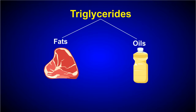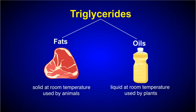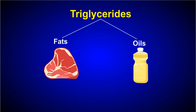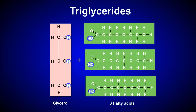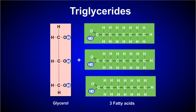Let's take a closer look at the category of lipids known as triglycerides. Triglycerides include the fats and oils. Fats such as lard and butter are solid at room temperature and are used by animals for insulation, protection, and long-term energy storage. Oils such as corn oil and olive oil are liquid at room temperature and are used by plants for long-term energy storage.